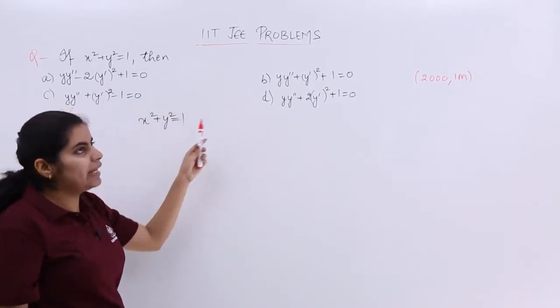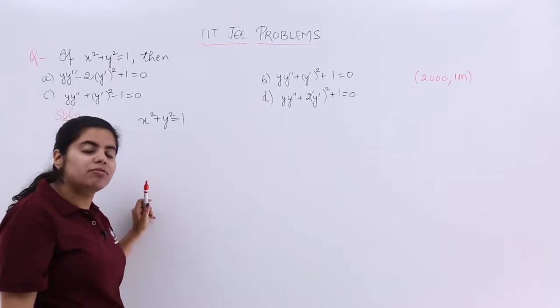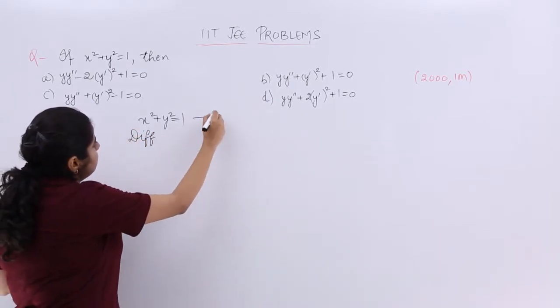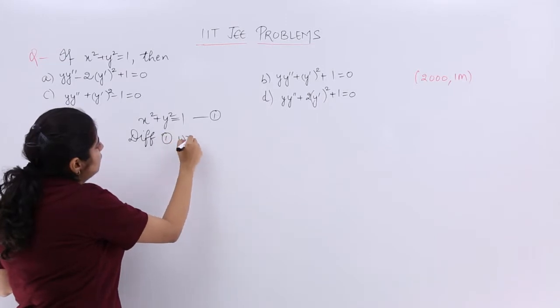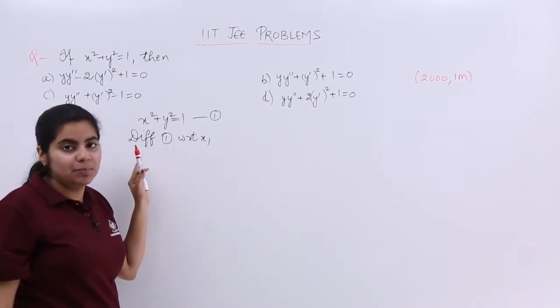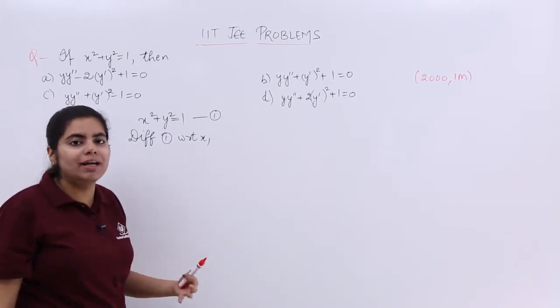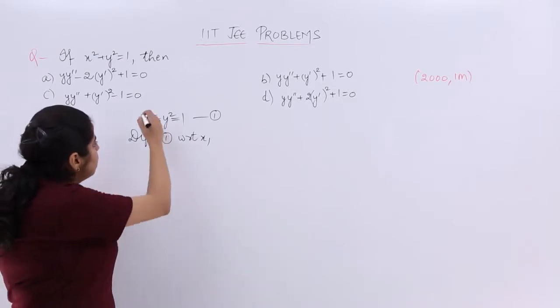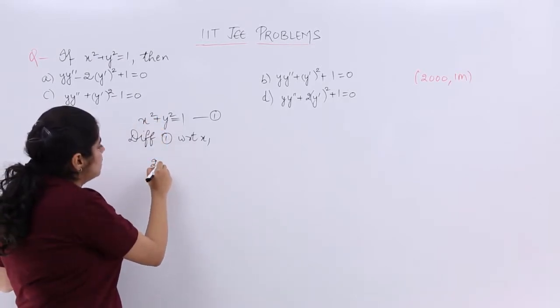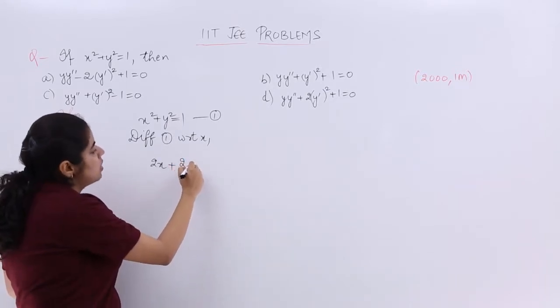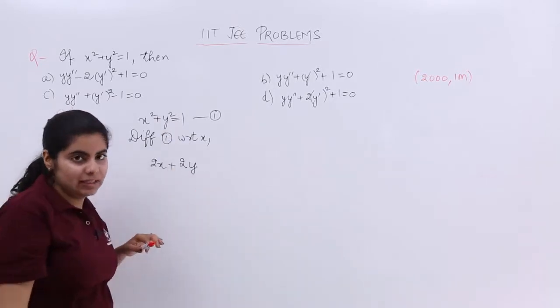In order to obtain any of these 4 correct options, first let's differentiate. So I write differentiating with respect to x. I have actually written 'diff' as the short form. Please do not write the short form in your examinations. This is just for our convenience. So differentiating x² gives me 2x. y² differentiation is 2y and dy/dx.